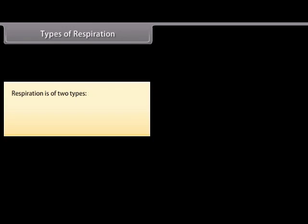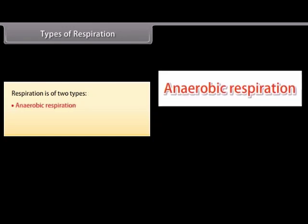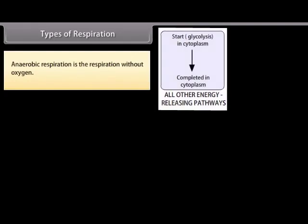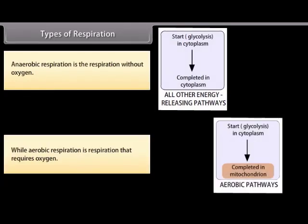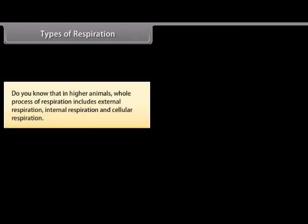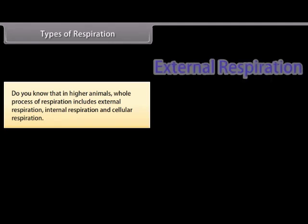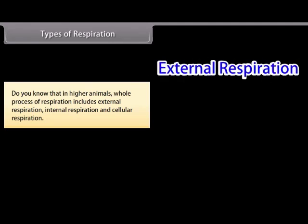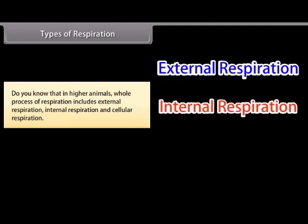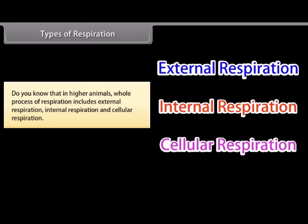Respiration is of two types: anaerobic respiration and aerobic respiration. Anaerobic respiration is the respiration without oxygen, while aerobic respiration is respiration that requires oxygen. In higher animals, the whole process of respiration includes external respiration, internal respiration, and cellular respiration.